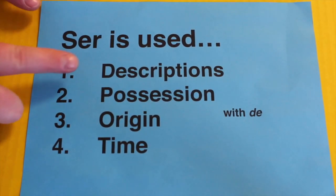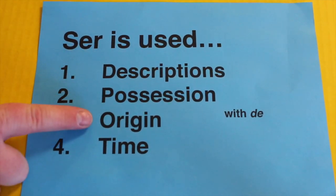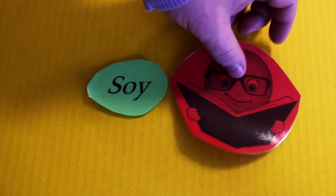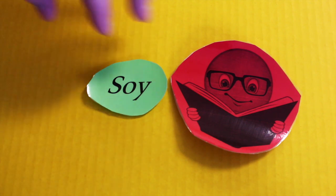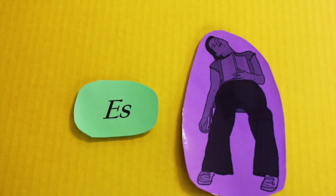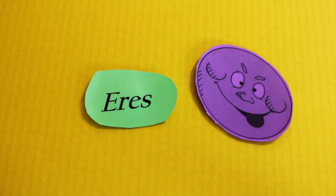Remember that ser is used for descriptions, possession, origin, and time. So, for descriptions, if you wanted to say that you were intelligent, you would say 'soy inteligente' — I'm intelligent. Or if you wanted to say she's lazy: 'ella es perezosa.' Or maybe you're telling somebody that they're funny: 'tú eres chistosa' or 'chistoso.'